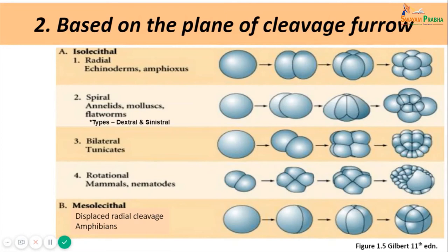The third type of holoblastic cleavage is bilateral cleavage, seen in tunicates. The characteristic feature is that the first cleavage plane establishes the plane of symmetry in the embryo, separating the embryo into future right and left sides. Each successive division is oriented to this plane of symmetry so that the half embryo on the left is exactly the mirror image of the half embryo on the right.